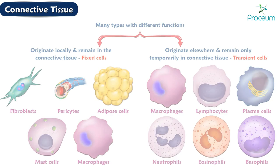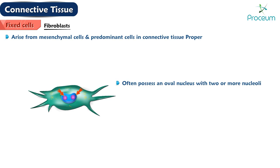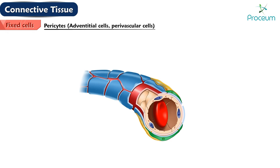Fibroblasts arise from mesenchymal cells and are the predominant cells in connective tissue proper. They often possess an oval nucleus with two or more nucleoli. Fibroblasts seldom undergo mitosis except in wound healing. They may differentiate into other cell types under certain conditions.